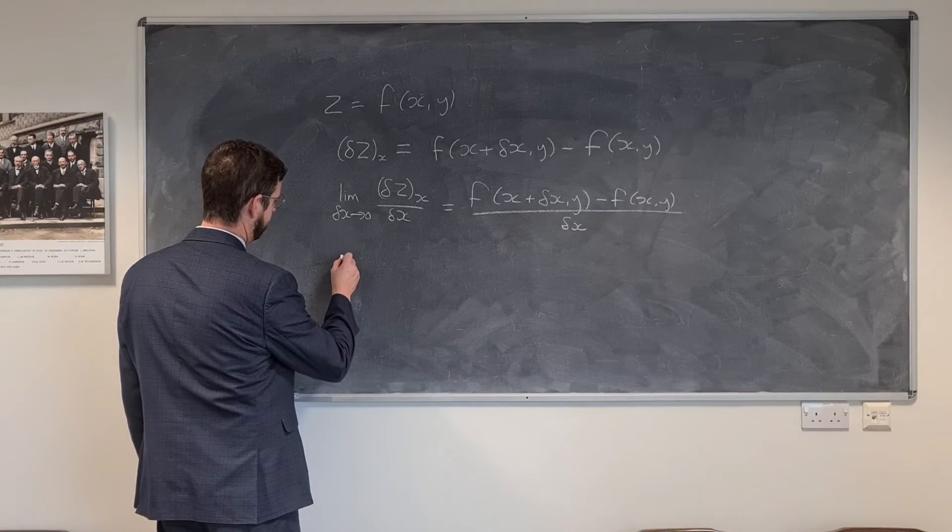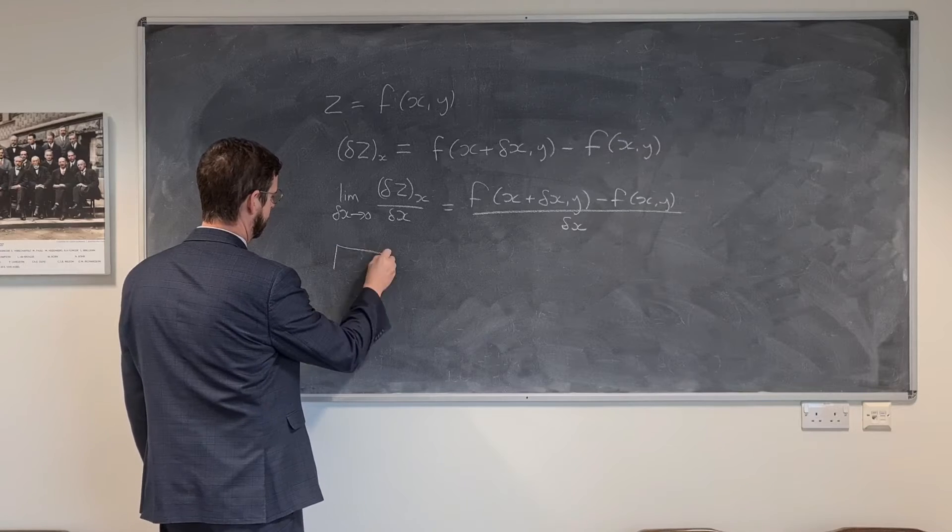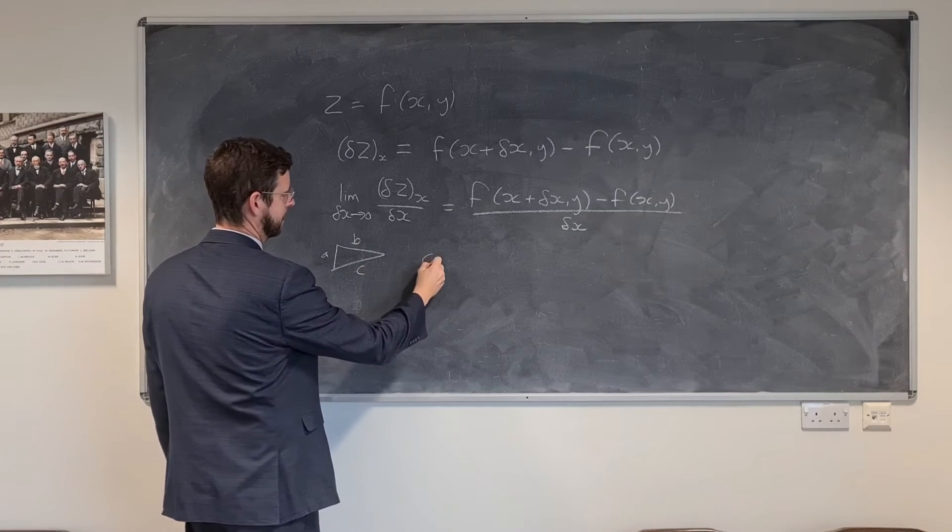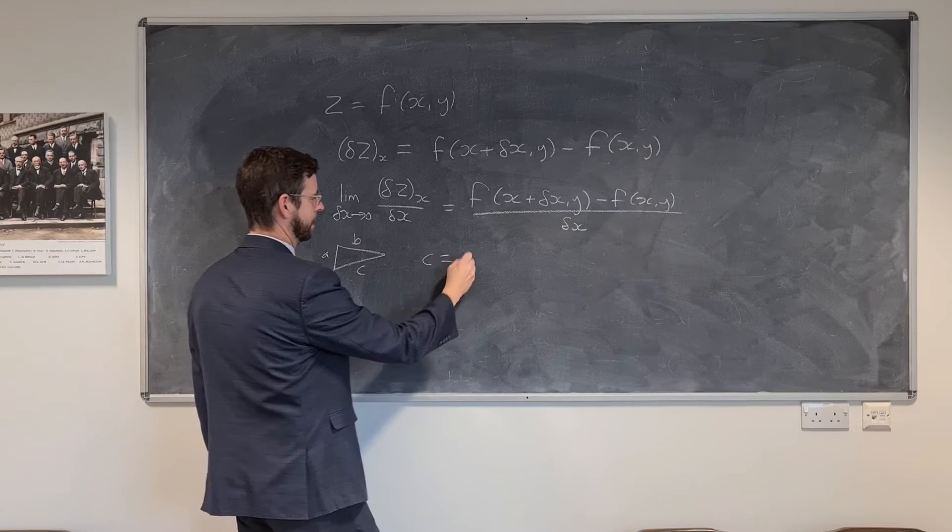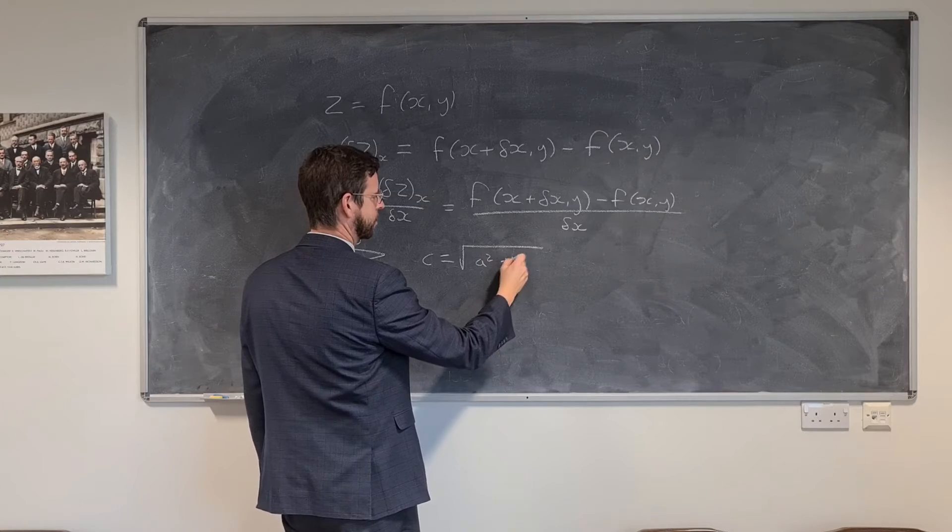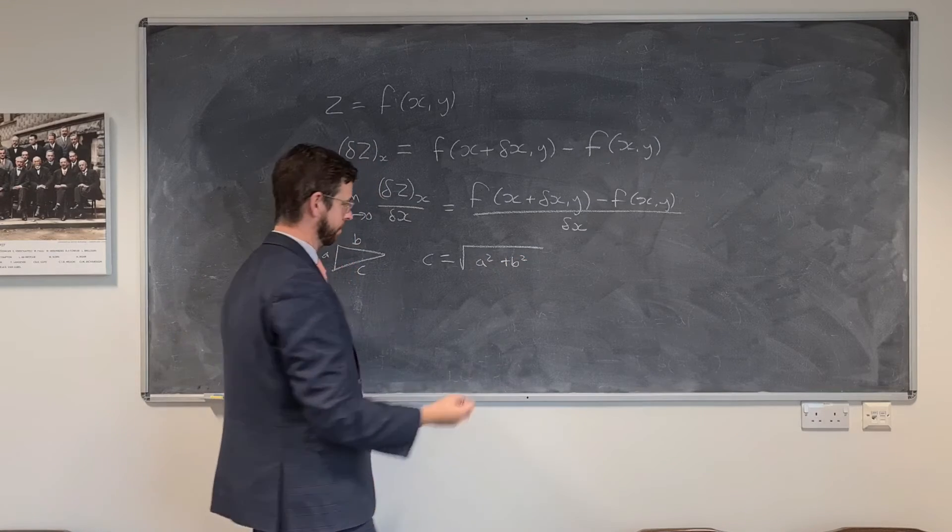Now, say for instance I had a triangle ABC, it was a right angle triangle ABC, then the magnitude of z would equal the square root of a squared plus b squared. Pythagoras' theorem, right?